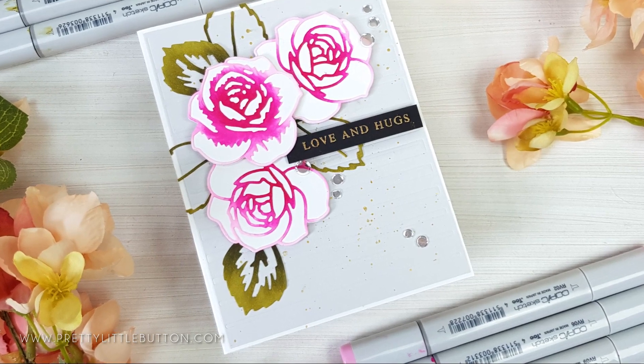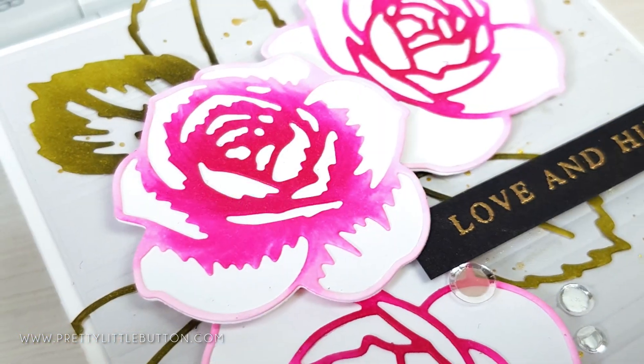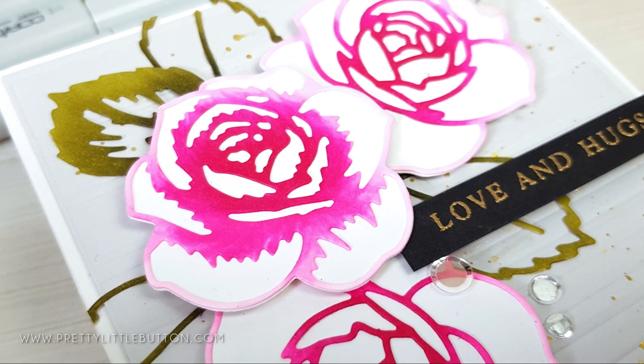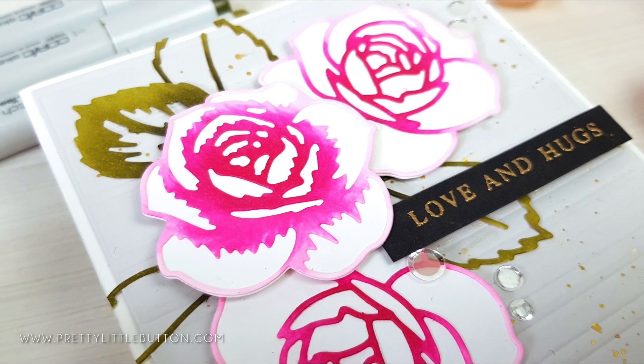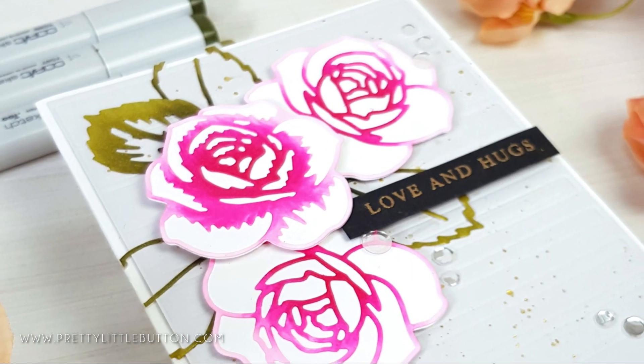Do you love to use die cuts on your cards but want to stretch how you use them and get more from them? Adding color detail with your Copic markers or any other alcohol markers is a quick way to change up your regular die cuts from plain cardstock and make your card stand out.